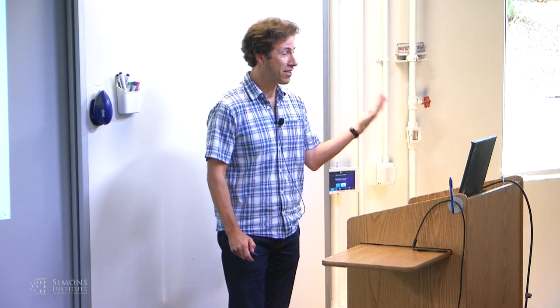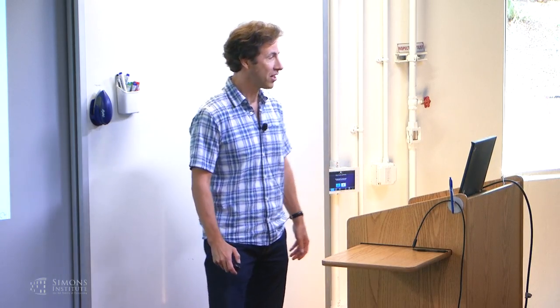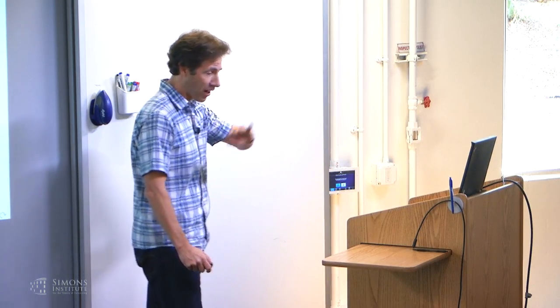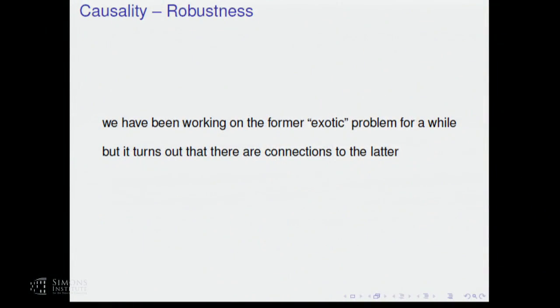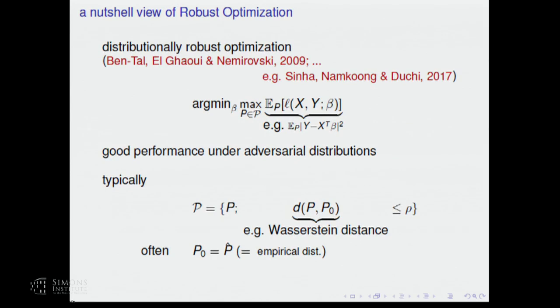If you look at this title, you might ask, what do these things have to do with each other? I start with causality and robustness. We have been working on the former — rather exotic problem — for quite a while, but it turns out that there are interesting connections to robustness, and this is what I want to explain today.